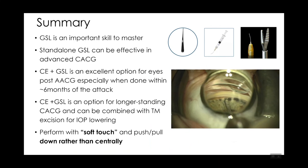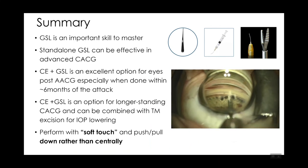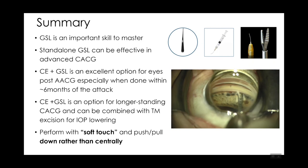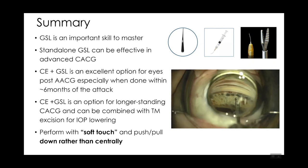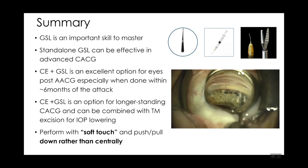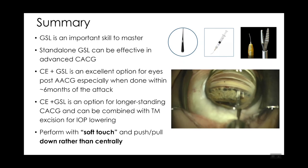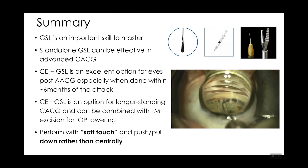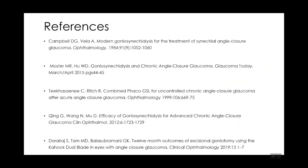In summary, GSL is an important skill to master. Standalone GSL can be effective in advanced chronic angle closure glaucoma. Cataract surgery with GSL is an excellent option for eyes post-acute angle closure glaucoma, especially within six months of the attack. Cataract extraction plus GSL is an option for longer-standing chronic angle closure glaucoma and can be combined with TM excision. Remember to perform with a soft touch — push and pull down rather than centrally. References are provided for further reading.